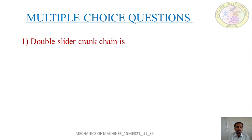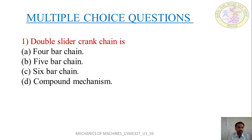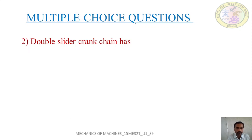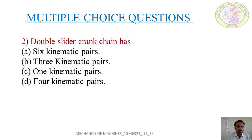Now let us discuss multiple choice questions for this session. The first question: what is the double slider crank chain - a 4-bar chain, 5-bar chain, 6-bar chain, or compound mechanism? The answer is a 4-bar chain because it has 4 bar links. It cannot be a 5-bar or 6-bar chain; if a mechanism has more than 4 links it would be a compound mechanism. The double slider crank chain has only 4 links. The next question: how many kinematic pairs does a double slider crank chain have - 6, 3, 1, or 4 pairs? The answer is 4 pairs: 2 turning pairs and 2 sliding pairs.